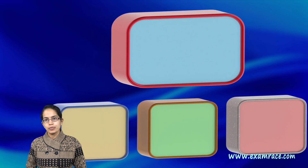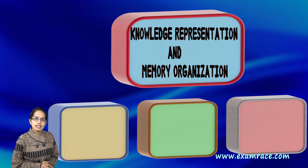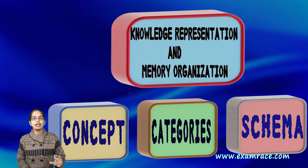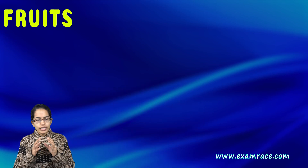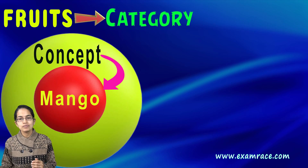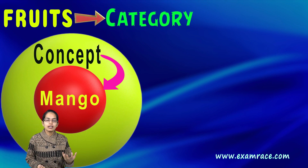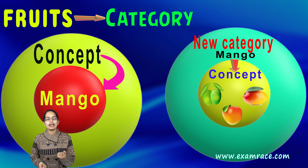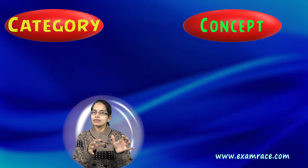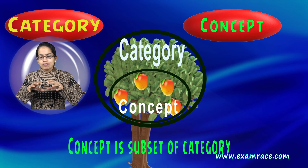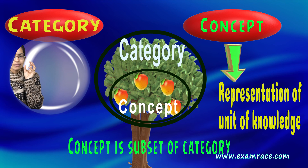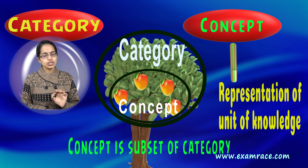Coming on to knowledge representation and memory organization, it's very important to understand three terms: concept, category, and schema. Concept is a representation of a unit of knowledge with mental categories, mental objects or events associated to it.